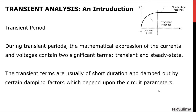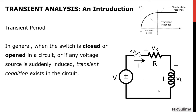The transient terms are usually of short duration and damped out by certain damping factors which depend upon the circuit parameters. In general, when the switch is closed or opened in a circuit, or if any voltage source is suddenly induced, transient condition exists in the circuit.